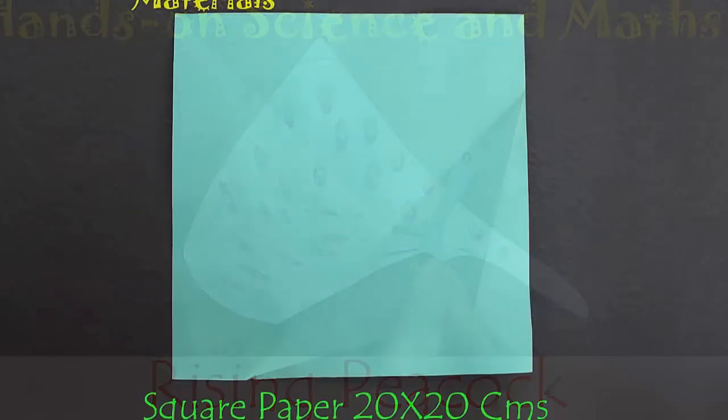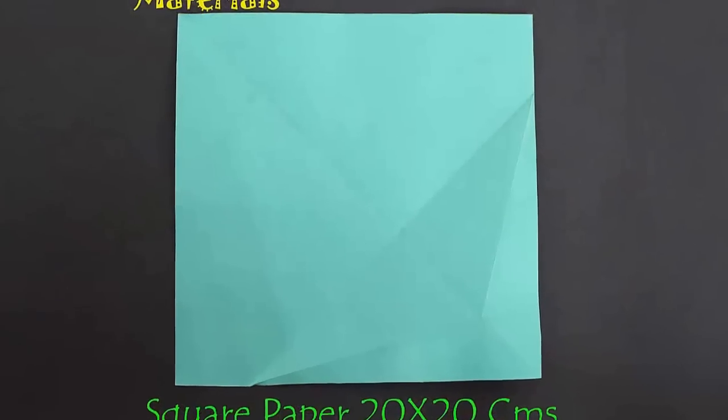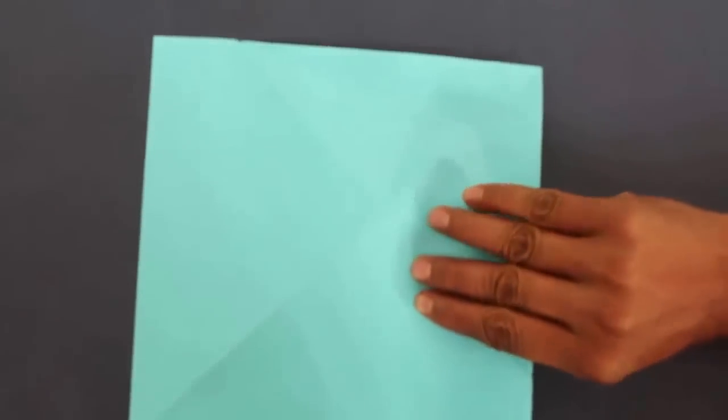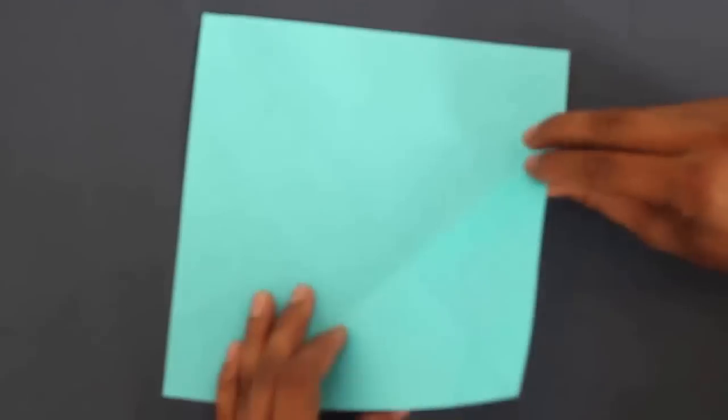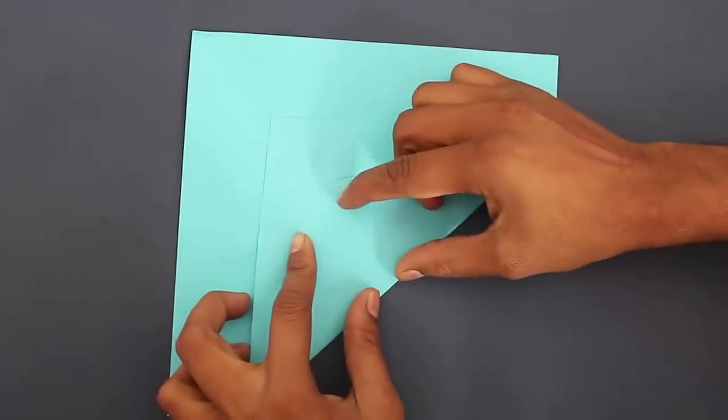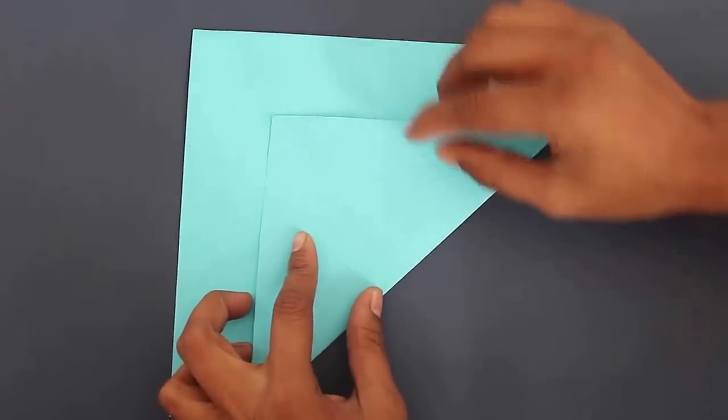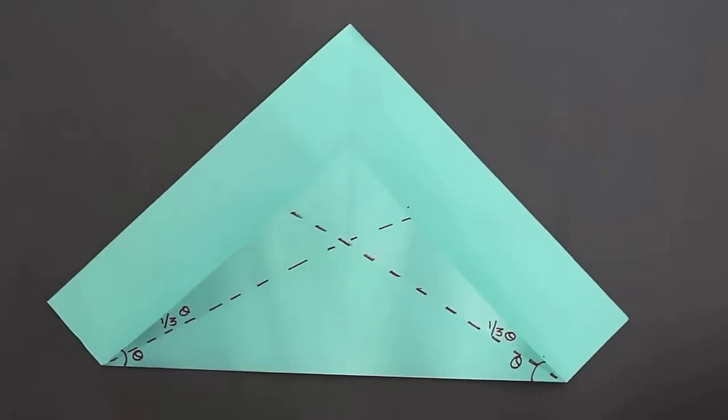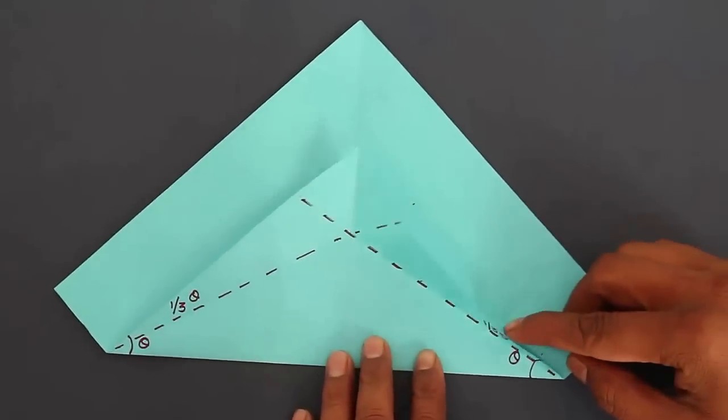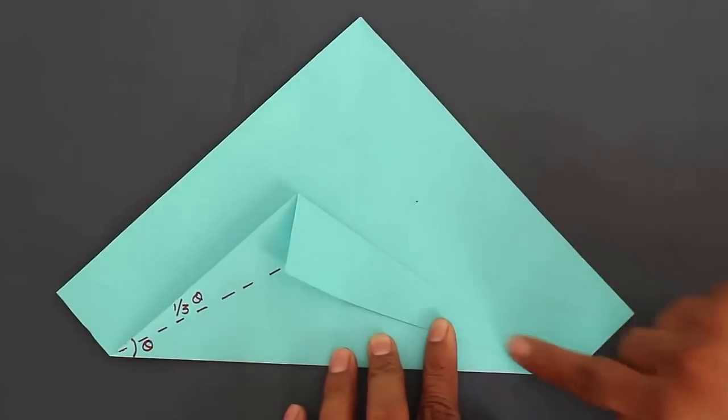To make this peacock you just need a square piece of paper 20 cm on one edge. First fold a diagonal, then fold one corner on the diagonal leaving about one third or 7 cm from the top.